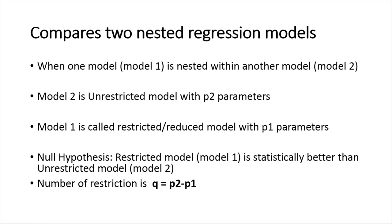Model 2 is the unrestricted model, or less parsimonious model, with more number of parameters, termed as p2. Model 1 is the restricted or parsimonious model with fewer parameters, termed as p1. The difference between p2 and p1 is the number of restrictions, termed as q.